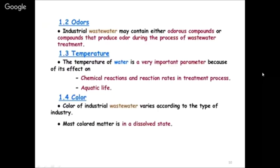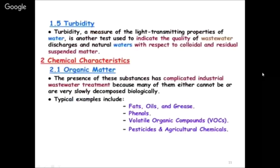Turbidity is a measure of the light-transmitting properties of water and is used to indicate the quality of wastewater discharge. These are all physical characteristics - you judge turbidity, color, and odor. Chemical characteristics include organic and inorganic matter. Organic matter has complicated industrial wastewater treatment because many organic compounds either cannot be biologically decomposed or decompose very slowly. Organic matter includes fats, oils, grease, phenols, volatile organic compounds, pesticides, and agricultural chemicals.